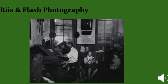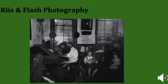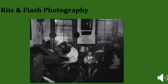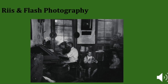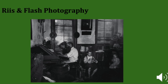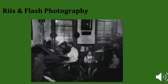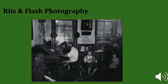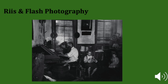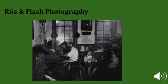Over the next decade, Rees used his new flash technology and a small detective camera to take hundreds of photographs of New York's poorest neighborhoods and those who lived in them. Some of Rees's photographs were posed, while others were candid, with his subjects unaware that they were being photographed. Rees would sometimes enter tenements and surprise tenants with a blinding flash, fleeing before they knew what had happened.